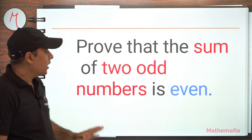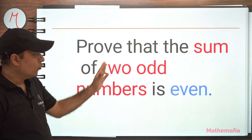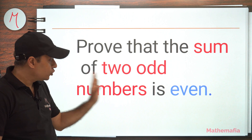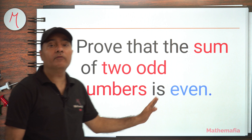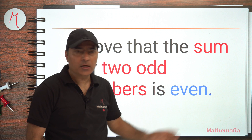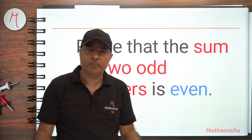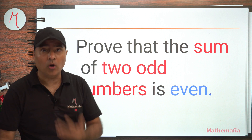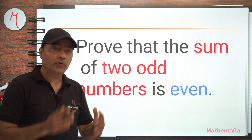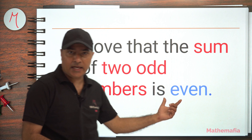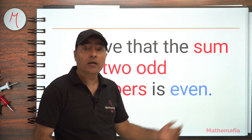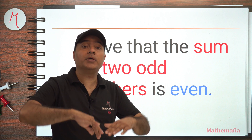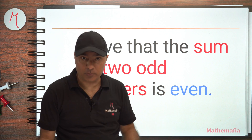In this tutorial, we are going to prove that the sum of two odd numbers is always even. This is a very simple thing. We already know that if we add any two odd numbers, we always get an even number. But we have to prove it, so it should be a generic proof.